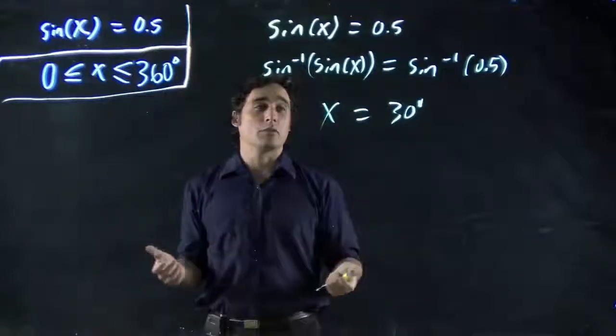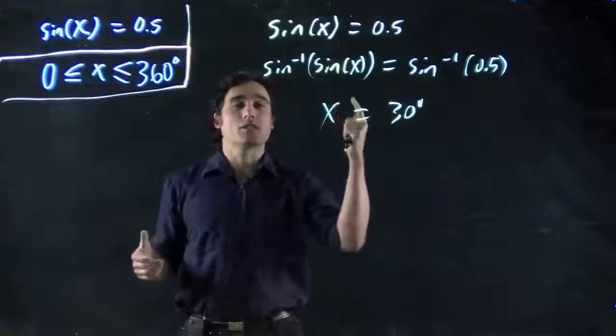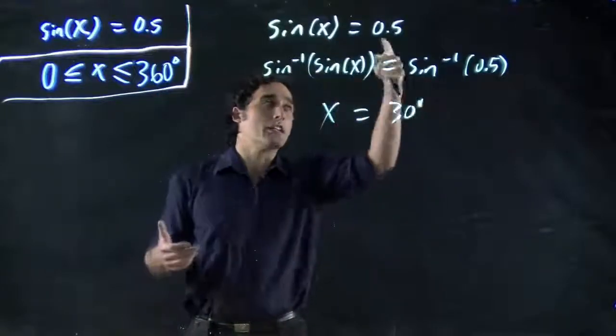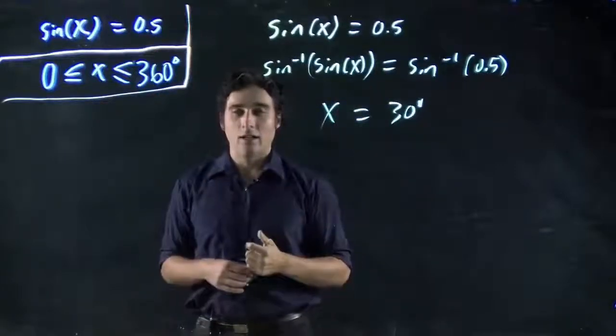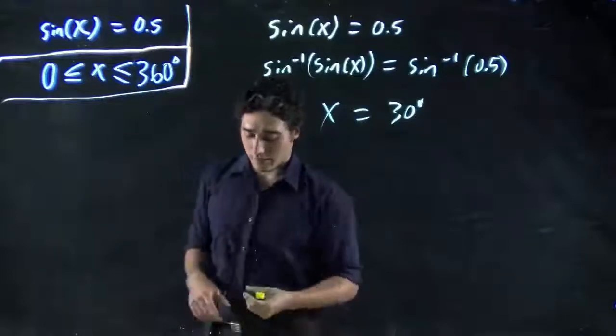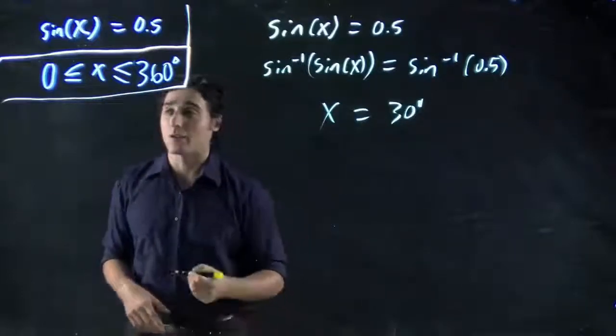And we might be tempted to call it a day. We've got an answer. We plug it in. We'd see this is true. Sine of 30 equals 0.5. But remember, this function repeats itself. In fact, if I draw out the sinusoidal function,